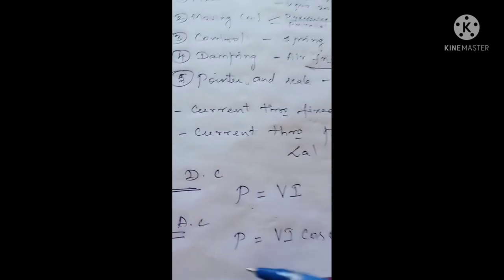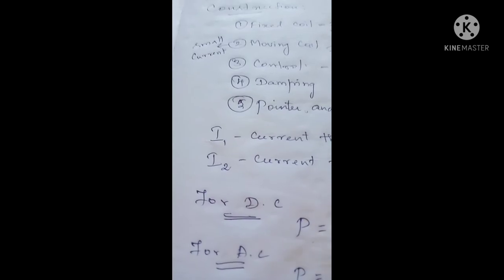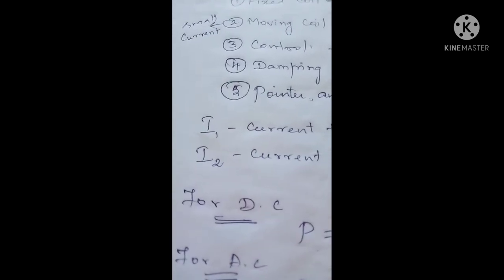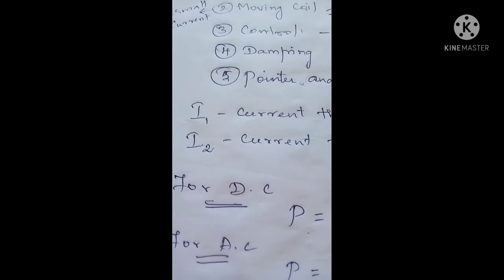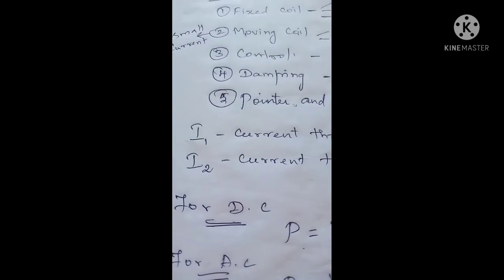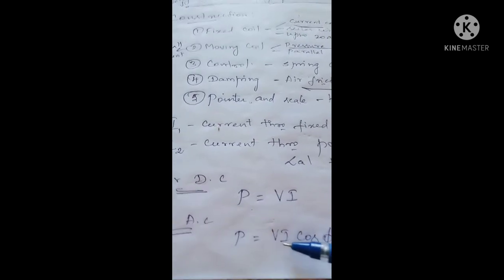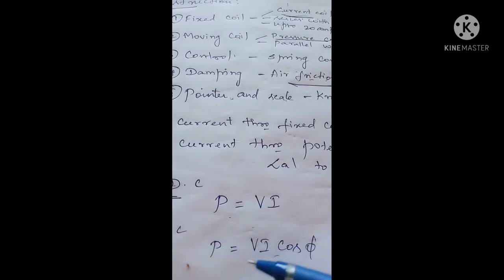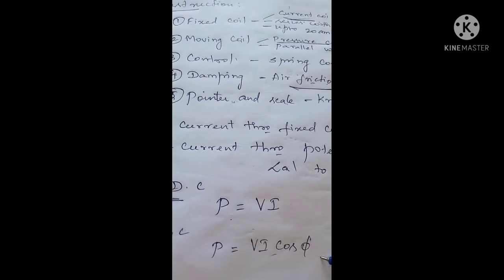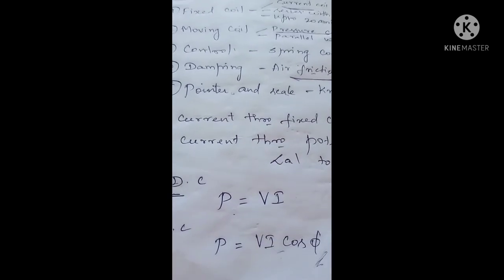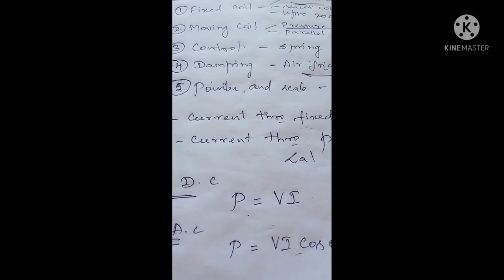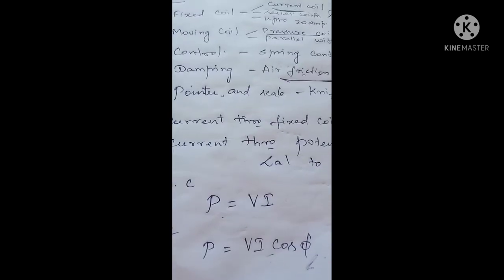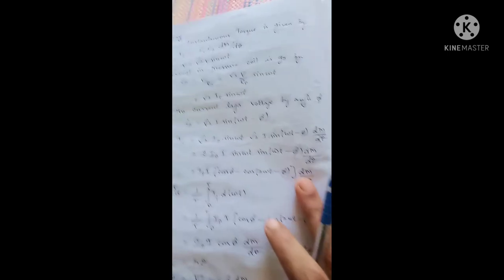When used in AC circuits, there develops a phase lag due to the presence of either inductance or capacitance in the coils. At that instance, the power in AC circuits is represented by P = VI cos φ, where φ is the phase angle between voltage and current.